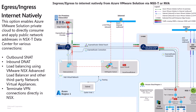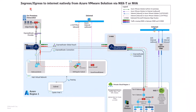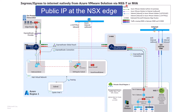We also have the availability, being that we can have inbound traffic, to terminate VPN connections directly to NSX. So if you have inbound connectivity, you can go directly from the internet and terminate VPN connections directly to NSX. Here we're going to talk about traffic flow and what that looks like from the egress and ingress internet natively from Azure VMware Solution. This is also known as public IP at the NSX Edge.